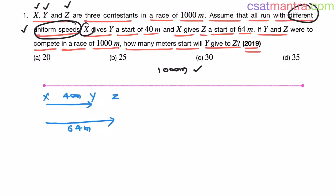Now X gives Y a start of 40 meters. We have learned these terminologies in linear races lecture. I request you to kindly go through them. X gives Y a start of 40 meters means Y is 40 meters ahead of X when they are about to start. X is giving 40 meters start to Y. Clear?